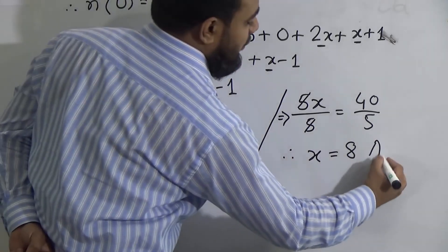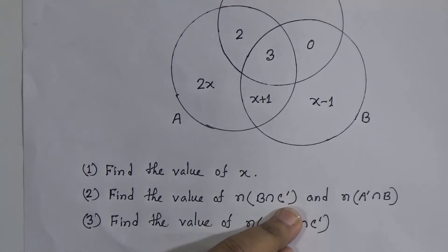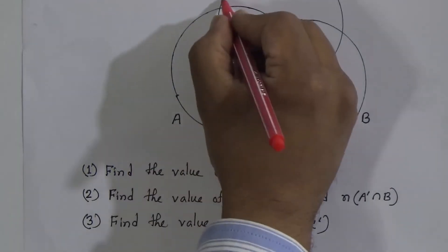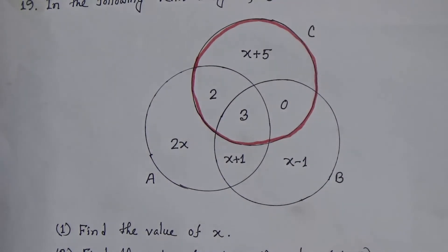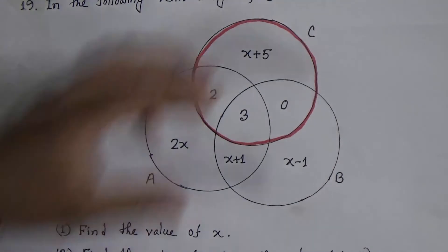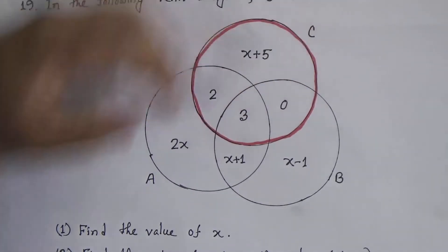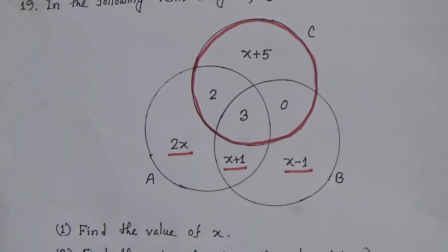Now we will solve Activity 2: find the value of n(B∩C'). We need to find out B intersection C prime. First, we must find C prime. C is this upper circle. C prime equals the outer part of this circle — the elements outside set C. C prime contains: 2x, (x+1), and (x−1).